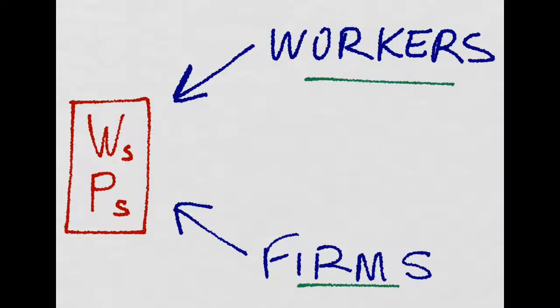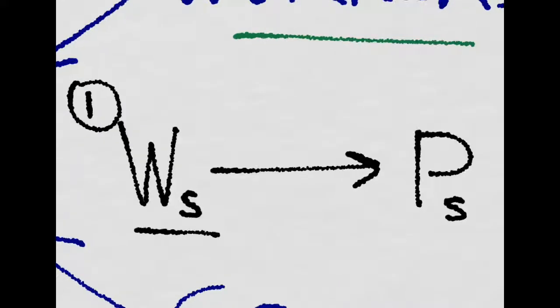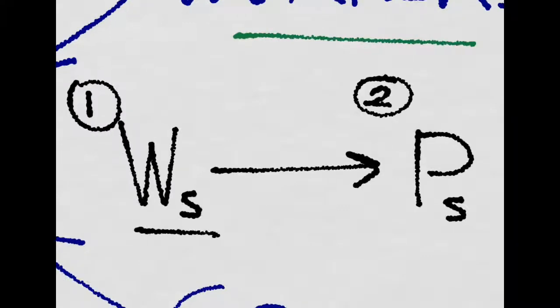That is, we're looking for the equilibrium real wage that clears the labor market. So first, wages are set through collective bargaining, and then afterwards, prices are set by firms.